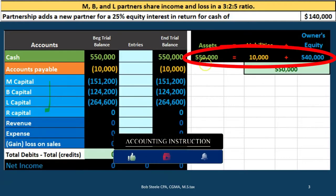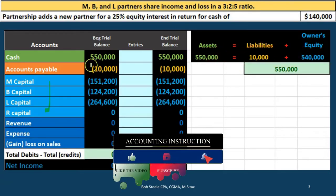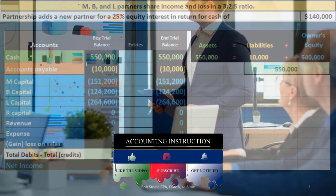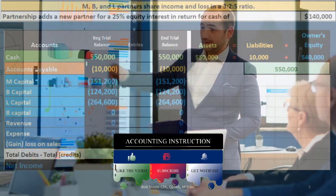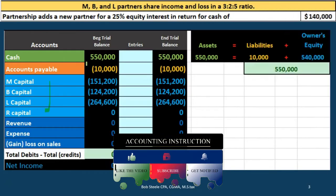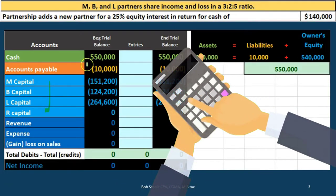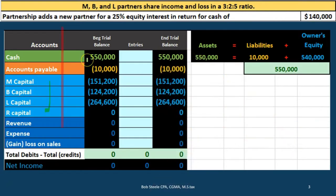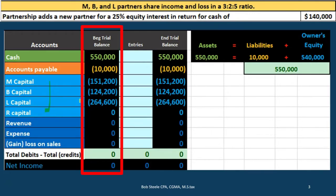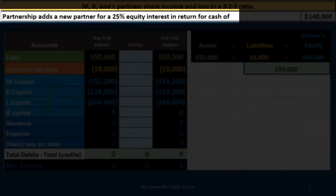It's important to note that the equity accounts equal assets minus liabilities. So $550,000 minus $10,000 equals the capital account balances. The capital accounts represent the book value — the net value, or assets minus liabilities — of the company.